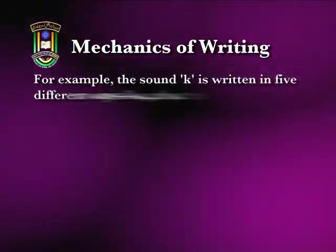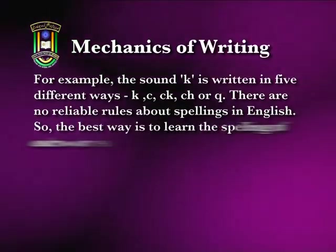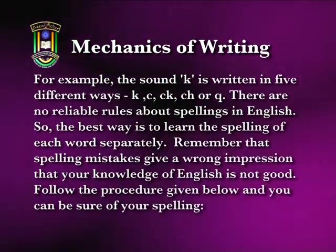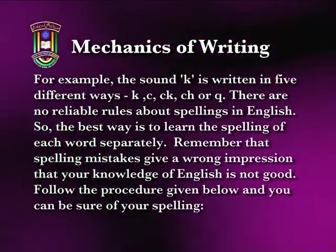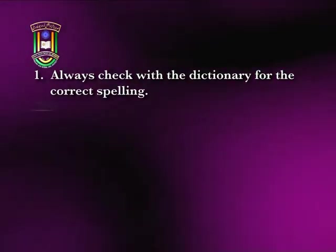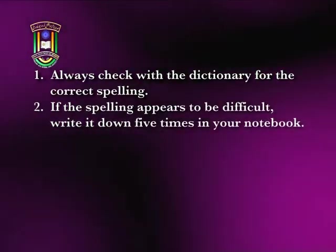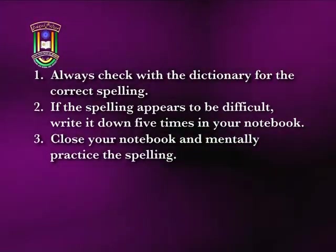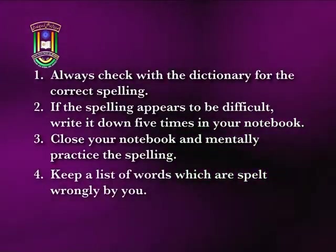For example, the same sound can be written in different ways: k, ck, ch, or q. There are no reliable rules about spelling in English. So, the best way is to learn the spelling of each word separately. Remember that spelling mistakes give a wrong impression that your knowledge of English is not so good. Always check with the dictionary for the correct spelling. If the spelling appears to be difficult, write it down five times in your notebook. Keep a list of words which are spelled wrongly by you.